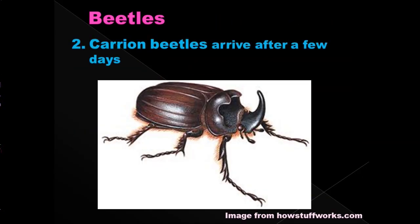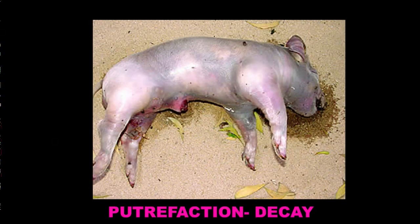Next we have beetles — commonly carrion beetles — arriving after just a few days. The flies aren't necessarily gone yet, but other insects are arriving as well. They're interested in the body at the putrefaction stage of decay, when body fluids are really starting to expel from the corpse. This is when we see lots of odor and increasing insect activity.